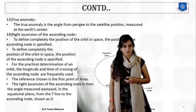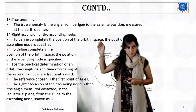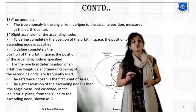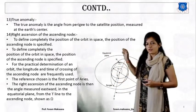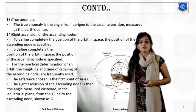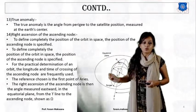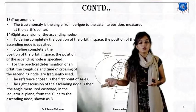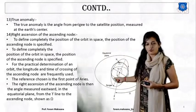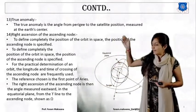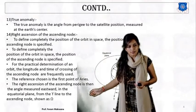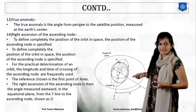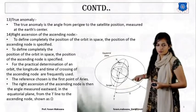The last definition is the right ascension of ascending node. To completely define the position of an orbit in space, the position of the ascending node must be specified. For the determination of an orbit, the longitude and time of crossing of the ascending node are used. As a reference we use the line of Aries, or the first point of Aries. The right ascension of ascending node is the angle measured eastward in the equatorial plane from the first point of Aries to the ascending node.